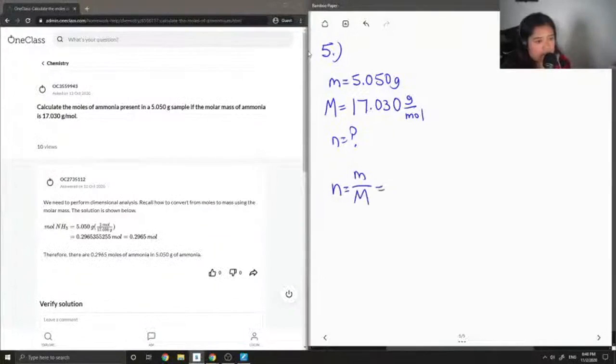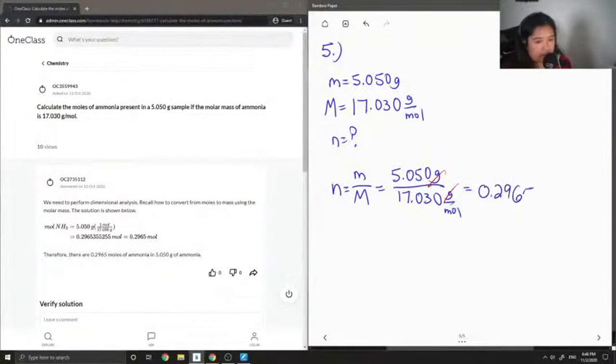Which is 5.05 grams divided by 17.030 grams per mole. Again, you'll see our units cancel out and we are left with 0.2965 moles.